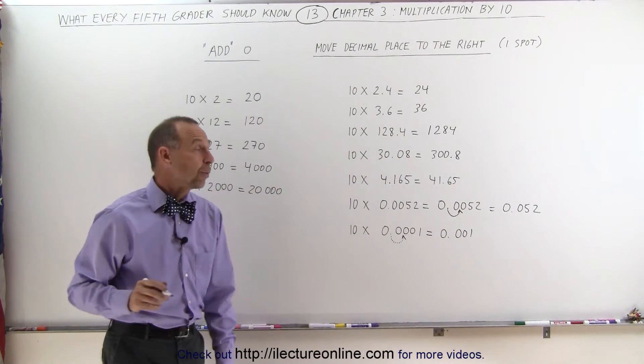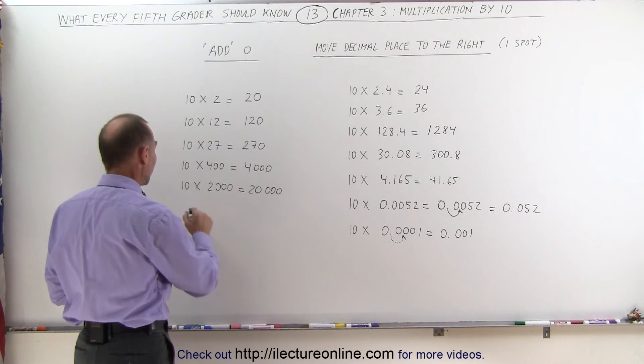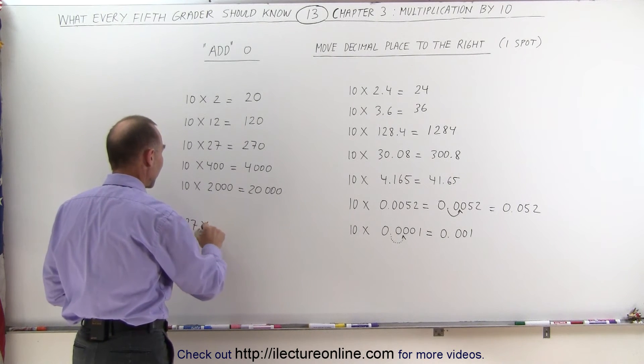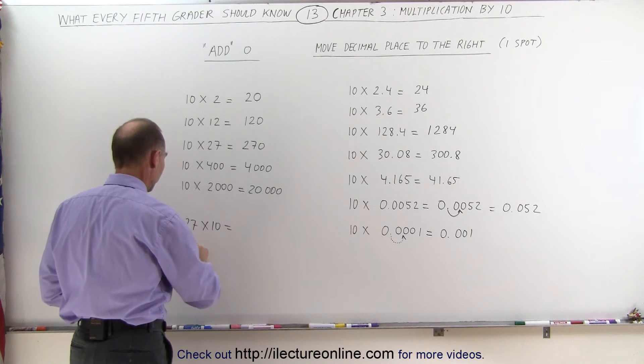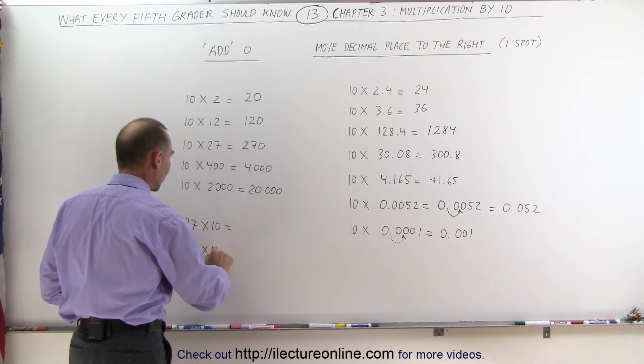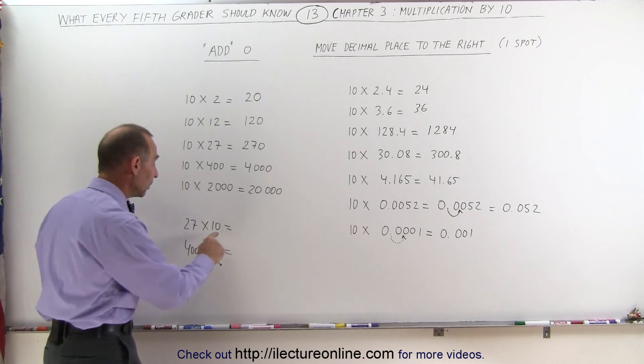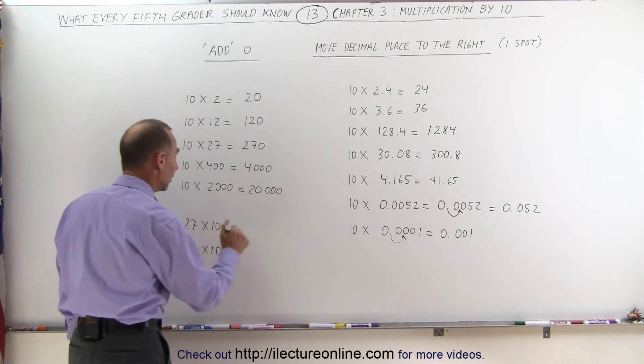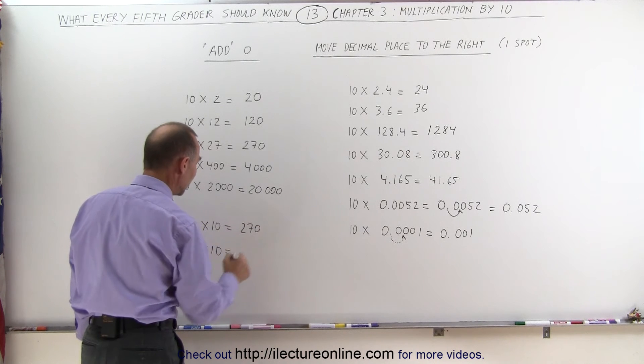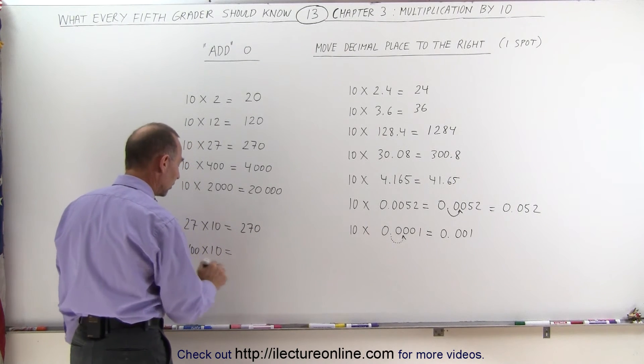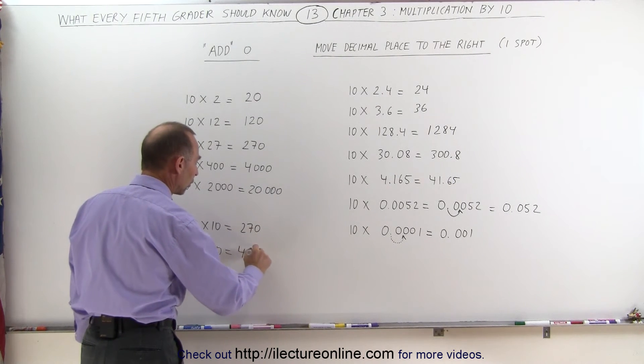Another thing we should be aware of is, what if we have these things in reverse? What if we have the number 27 times 10, or the number 400 times 10? It doesn't matter if it's 10 times 27, or 27 times 10. We simply add this 0 to the other number, and this becomes 270. We simply add this 0 to the other number, and this becomes 4,000.